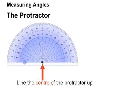We'll line up the center of the protractor with the vertex of the angle, the corner bit of the angle where the two arms meet. That's where we'll try and put the center of the protractor nice and accurately.